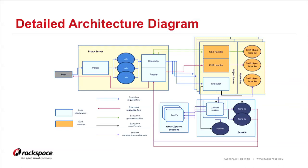The application to execute inside the ZeroVM instance can also be stored already inside Swift as an object and pre-validated. The executor residing on the object storage nodes handles connecting individual ZeroVM sessions to other ZeroVM sessions in the cluster, allowing you to create entire MapReduce operations or really any directed acyclic graph you define in the job manifest file.